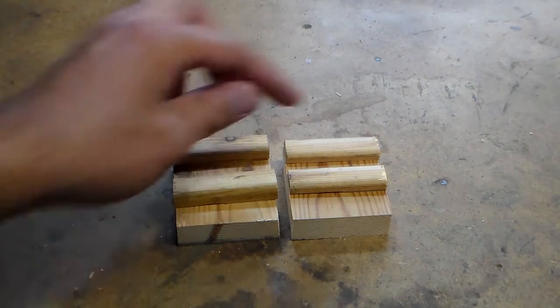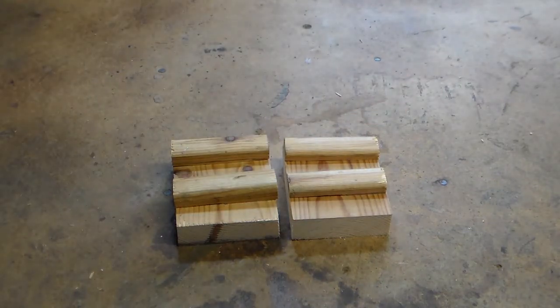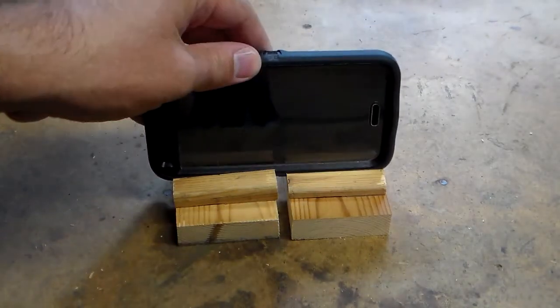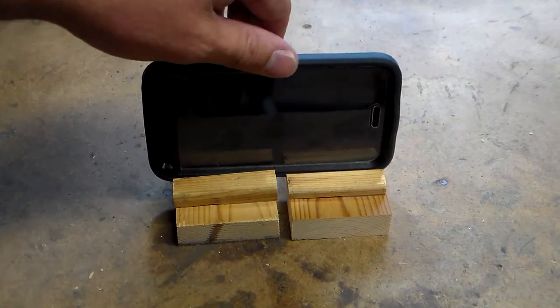The distance between these two thinner pieces is going to be determined by the thickness of your phone. Mine has an OtterBox on it, so obviously it's a little bit thicker. So I'm probably going to go with around a half an inch, but measure your phone and use your own discretion.